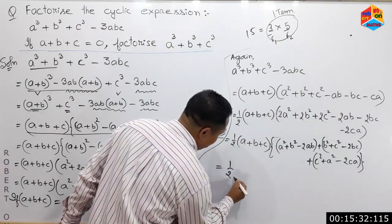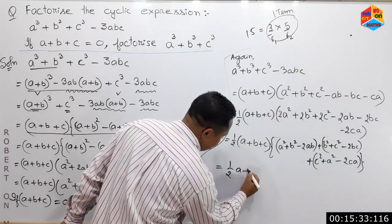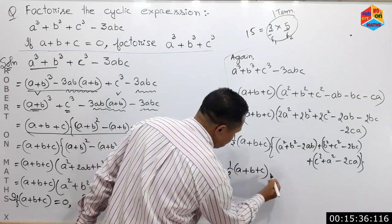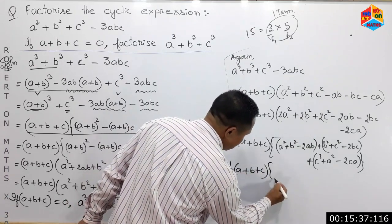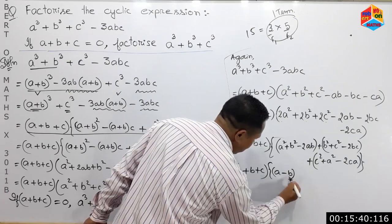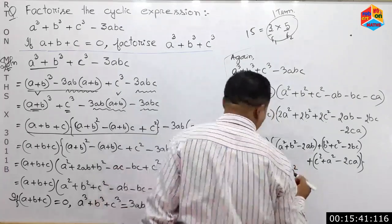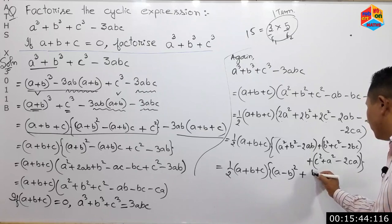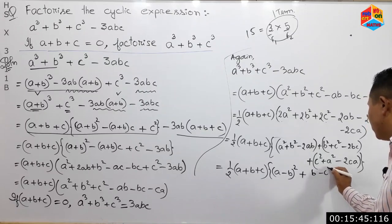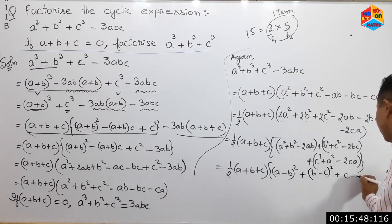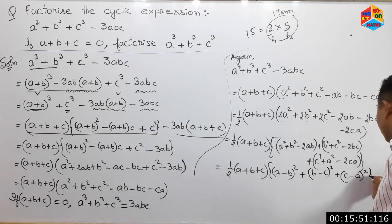Half of a plus b plus c, times a minus b whole square, plus b minus c whole square, plus c minus a whole square.